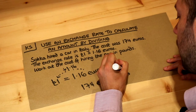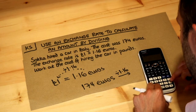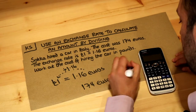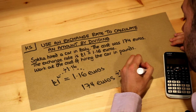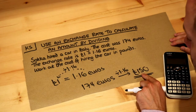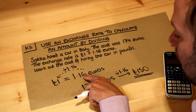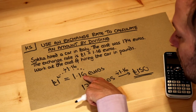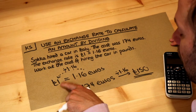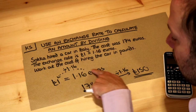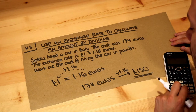If we divide by 1.16 on the calculator, that gives you 150 pounds. Always check whether your answer should be bigger or smaller than the original value. We can see that the number of euros is bigger than the number of pounds — 1.16 is bigger than 1, so we expect to have more euros than pounds. Indeed, we have more euros than we do pounds.